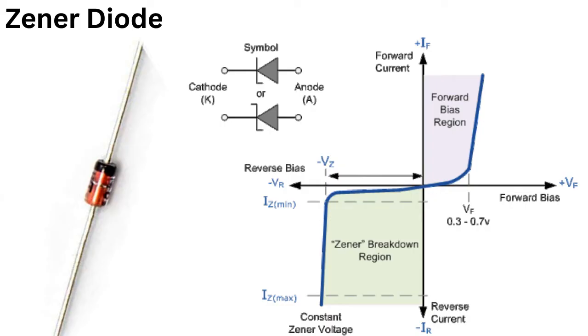The symbol for a Zener diode is the same as a regular diode, with the addition of a small Z or VZ next to the arrowhead, indicating the diode's voltage rating.